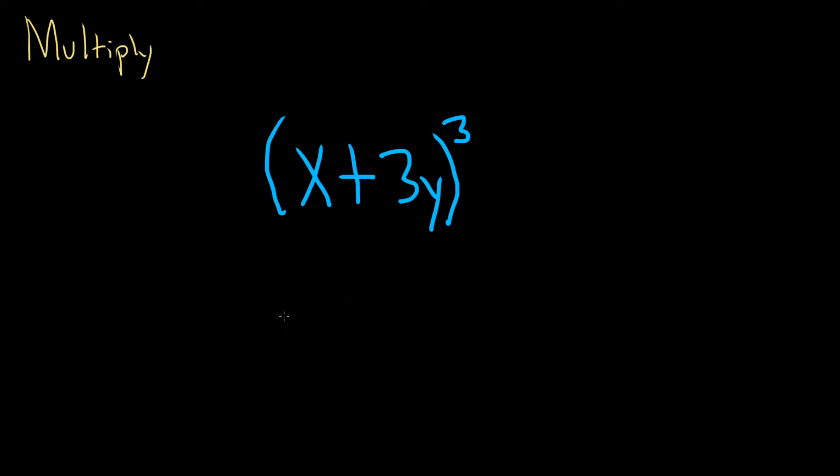In this problem, we're going to multiply x plus 3y cubed. So we have a binomial, that's what this is called because it's two terms, and we're going to cube it.